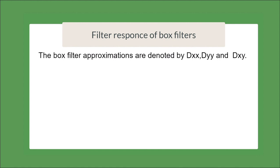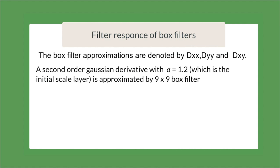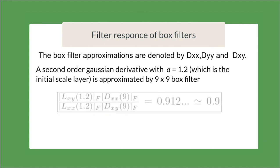The box filters are denoted by Dxx, Dyy and Dxy. A second order Gaussian derivative filter of sigma 1.2 is approximated by 9 cross 9 box filter. Sigma equal to 1.2 is the initial scale layer. The weights in the box filter are kept quite simple for computational efficiency. But during the computation of Hessian matrix determinant, we account for it. So, it is given as Dxx multiplied by Dyy minus 0.9 times Dxy whole square.